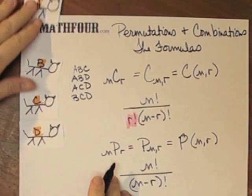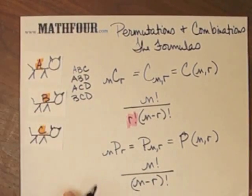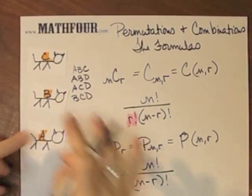If instead, I have a permutation, notice I could do A, B, C. I could do A, C, B. I could do C, A, B, or C, B, A. Or B, C, A, or B, A, C.